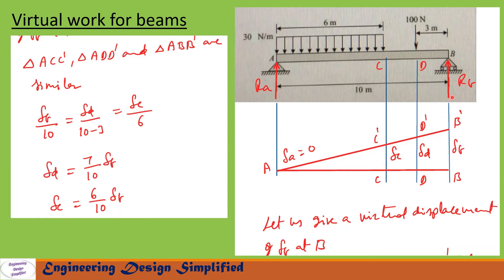To find reaction at B (RB), let us give a virtual displacement of delta_B at B. The beam will assume the position A, C', D', and B'. Displacement at B is delta_B, at D is delta_D, at C is delta_C, and at A it is 0. We have similar triangles: A-C-C', A-D-D', and A-B-B'.